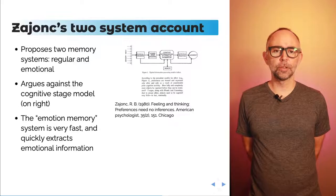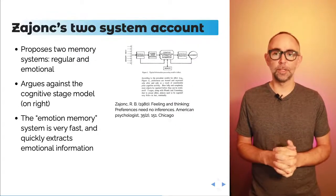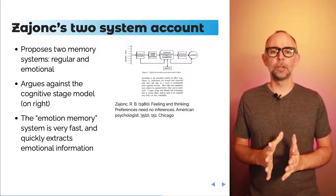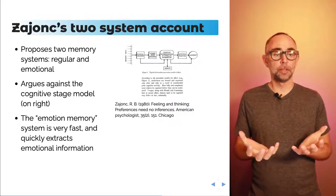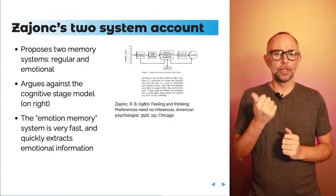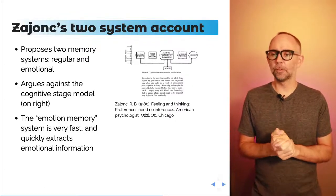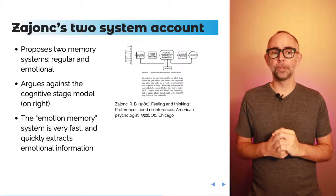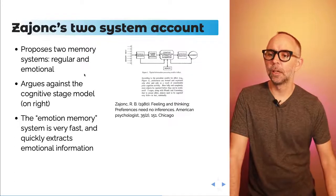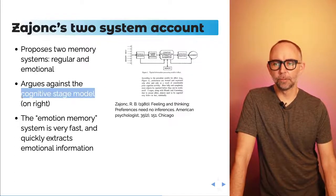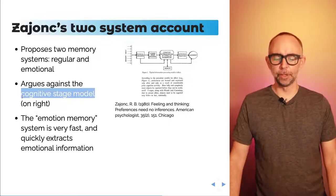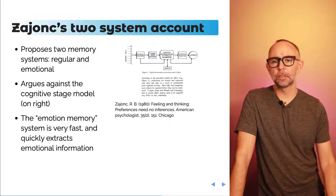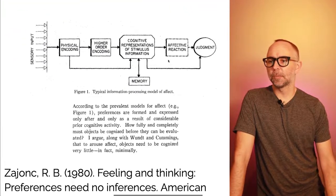The researcher Zjonc, who found this effect, also proposed an explanation of it. Here is Zjonc's two-system account. He proposes two memory systems must be at play: the regular memory system that we're all familiar with, and a special emotional memory system. His argument was that the standard cognitive stage model was insufficient to explain the mere exposure effect — we've seen examples of cognitive stage models when we talked about the multi-store model.